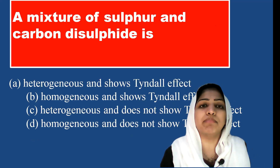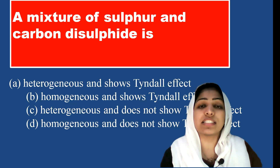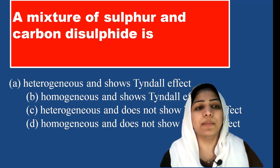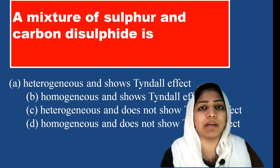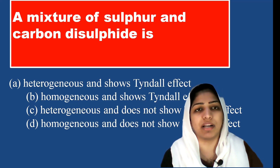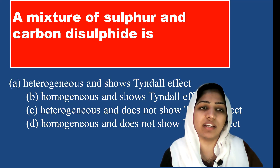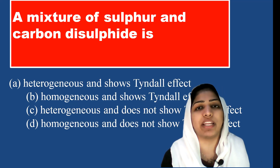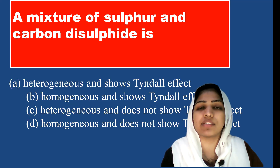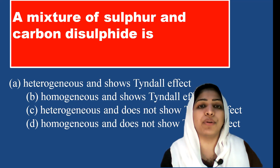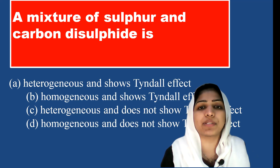A mixture of sulfur and carbon disulfide is what? Sulfur and carbon disulfide are mixed — that is a colloidal solution. This is an example of a heterogeneous mixture. In heterogeneous mixtures we learn suspensions and colloids. It is a colloidal mixture and it shows the Tyndall effect.